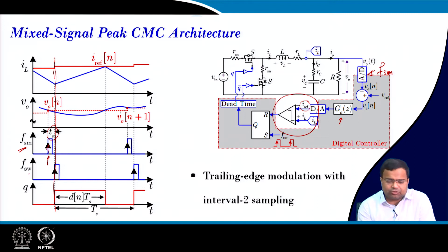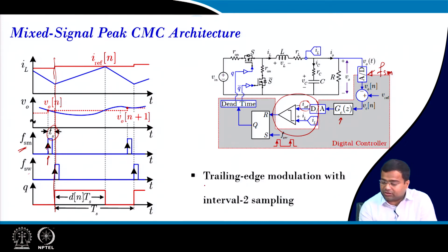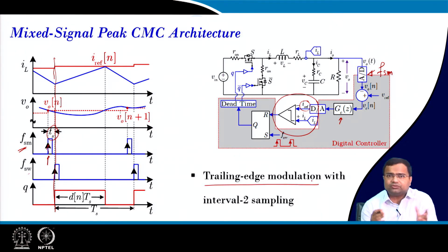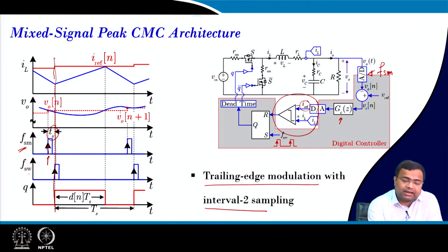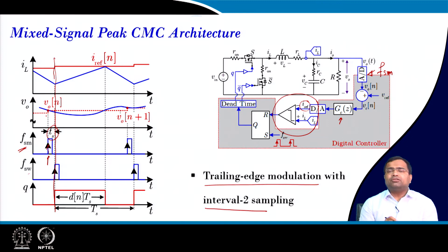This is called trailing edge modulation because it is peak current mode control. It is also called interval-2 sampling because we are taking the sample at the falling edge of the voltage — that means when the switch is off.